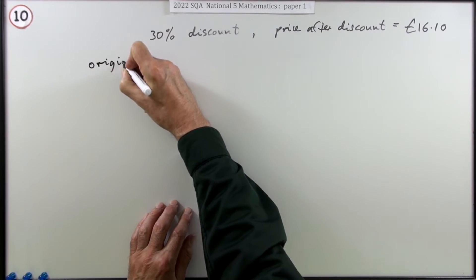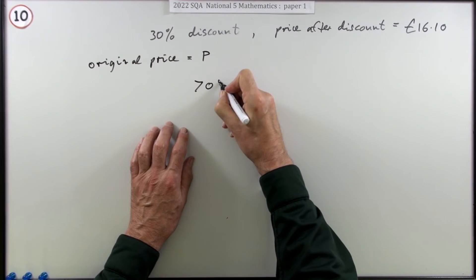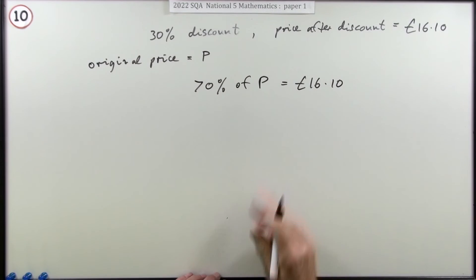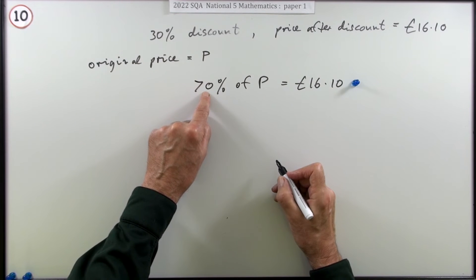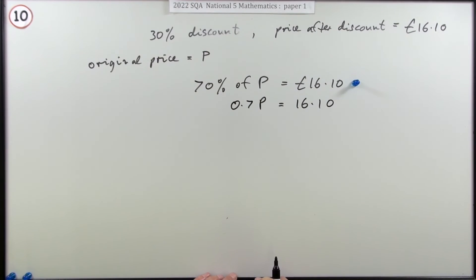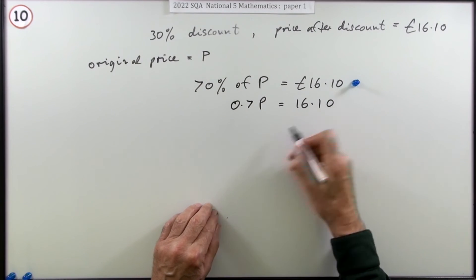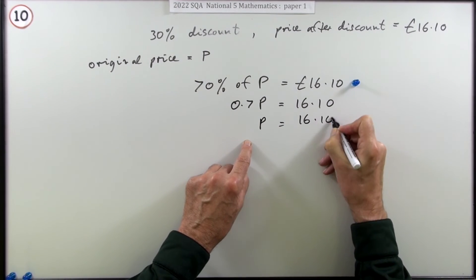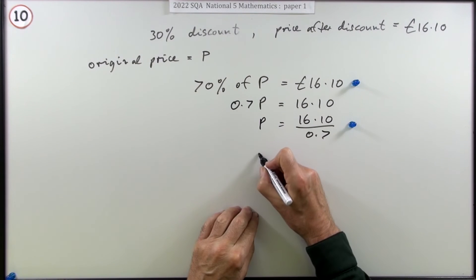You would say: if you've had 30% taken off, you're left with 70% of the price. Let the original price be P. Then 70% of that original price is £16.10 — realising you've got 70% is worth a mark. 70% as a decimal is 0.7, so you can say 0.7P equals 16.10. That means P equals 16.10 divided by 0.7 — that would be the second mark. The last mark is just for doing that calculation.